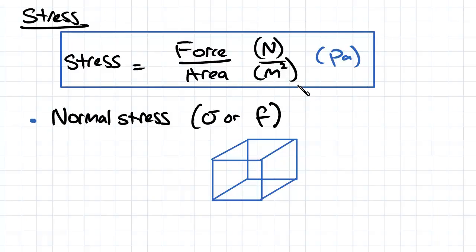We won't always be using newtons and meters squared in our calculations. One other common set of units that we might be using is newtons and millimeters squared, and that's going to give us a result of megapascals.